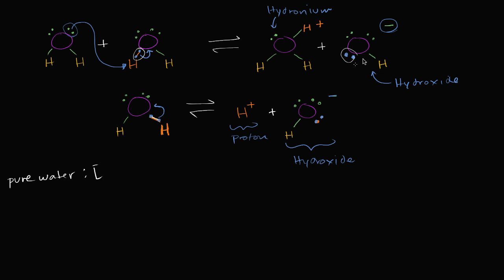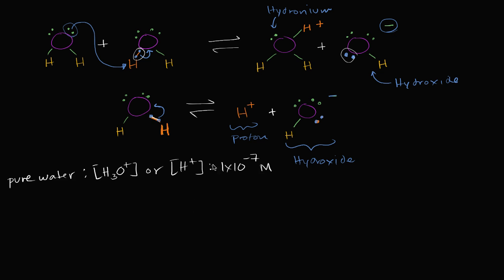...we could think about it in two ways. If we think about the top way of expressing auto-ionization, we could say the concentration of hydronium ions; or we could think about the concentration of hydrogen ions. These two are equivalent because hydrogen ions really just associate with a water molecule and become hydronium. In pure water at 25 degrees Celsius, the concentration — whether hydronium or hydrogen ion concentration — is approximately 1 times 10 to the negative 7 molar, the same thing as 1×10⁻⁷ moles per liter.